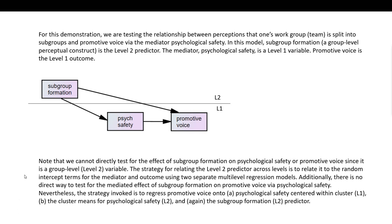It's important to note that we cannot directly test the effect of subgroup formation on psychological safety or promotive voice, since it's a level 2 variable and the other two variables are level 1 variables. The strategy for relating the level 2 predictor across levels is to relate it to the random intercept terms for the mediator and outcome variable using two separate multilevel regression models. The strategy is to regress promotive voice onto psychological safety centered within cluster at level 1, the cluster means for psychological safety at level 2, and the subgroup formation level 2 predictor.